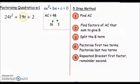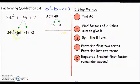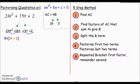I've done that now—split the B term up. Then we're on to step 4: factorize the first two terms. Again, grade D factorizing. Just factorize these first two terms into a single bracket. 8t goes into both, so factor that out and you'll be left with 3t + 2: 8t(3t + 2).